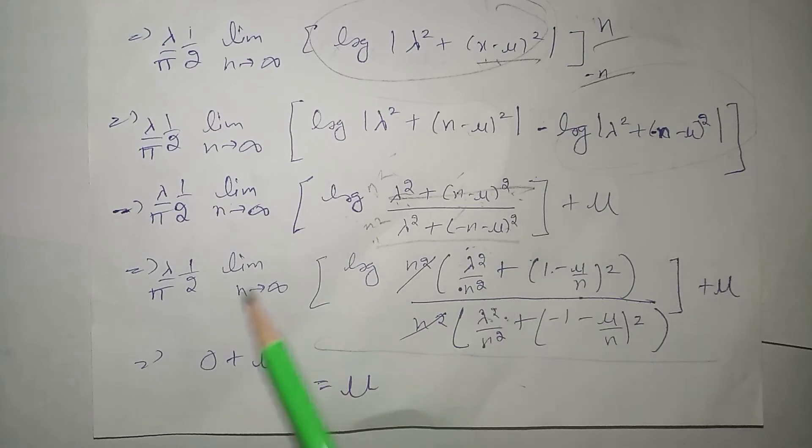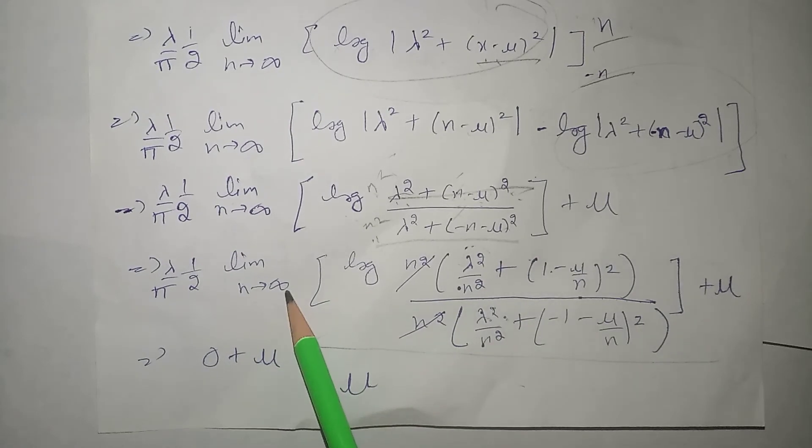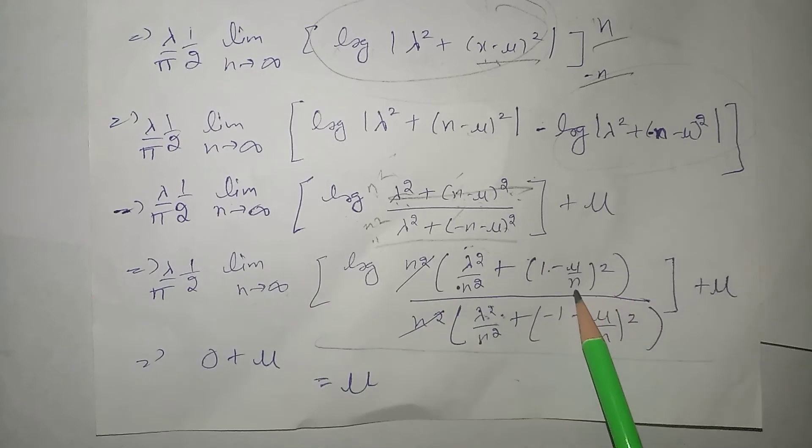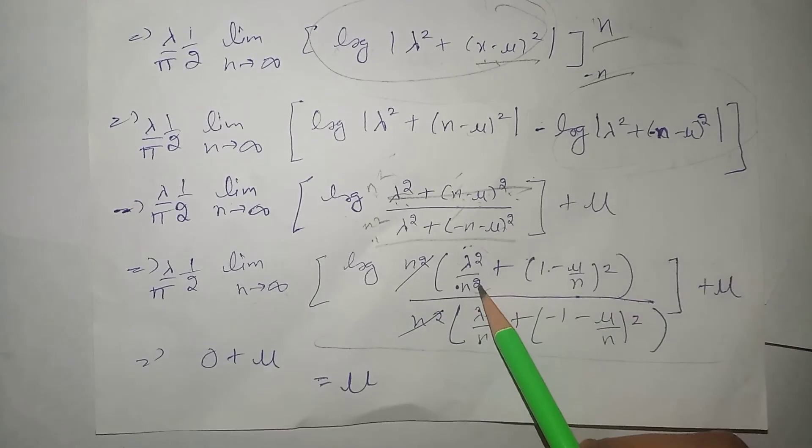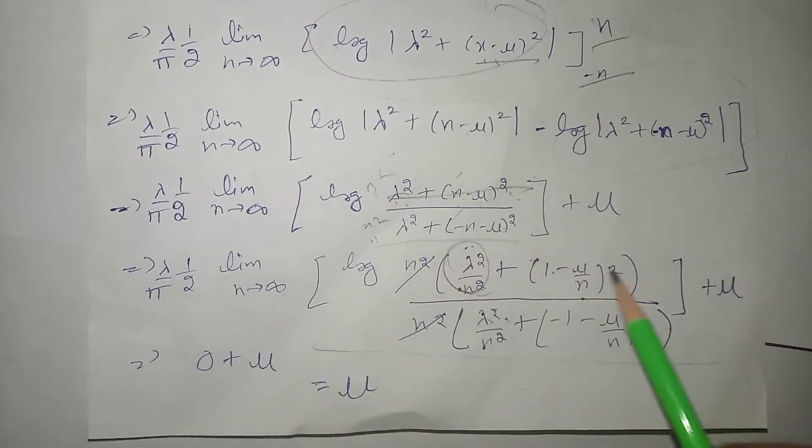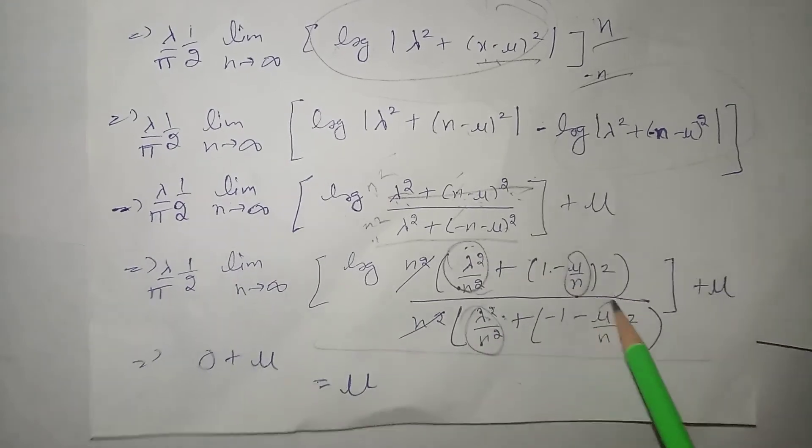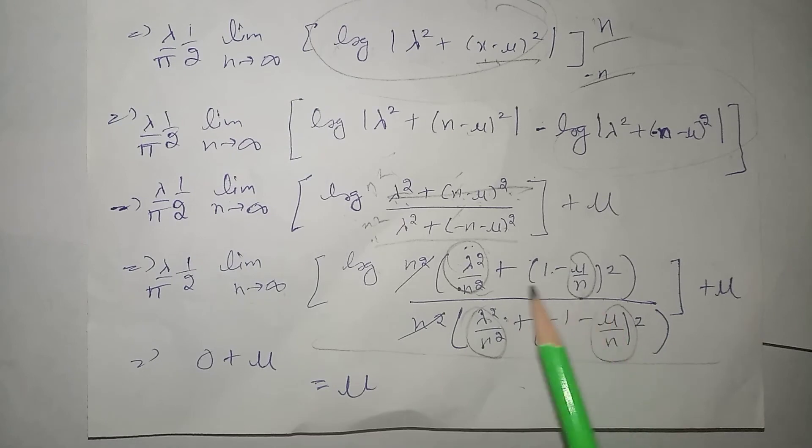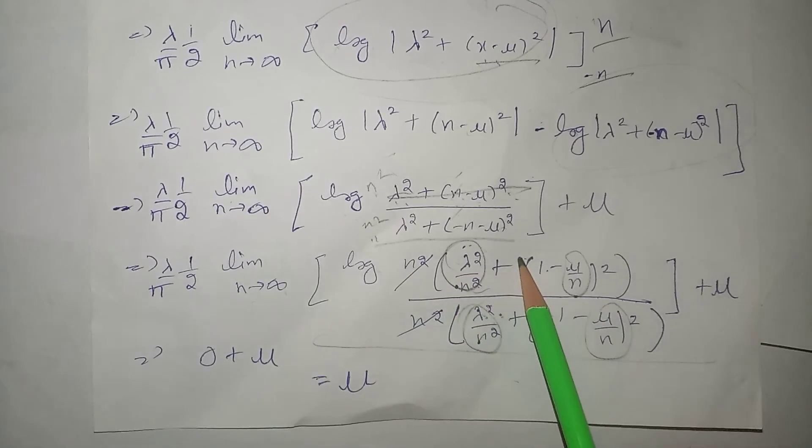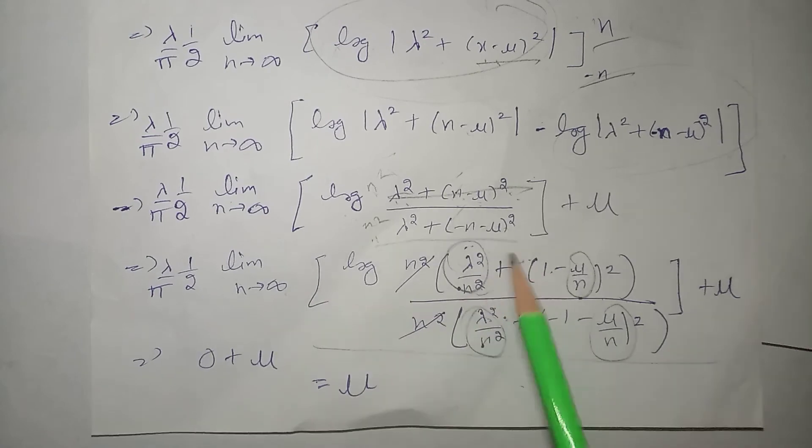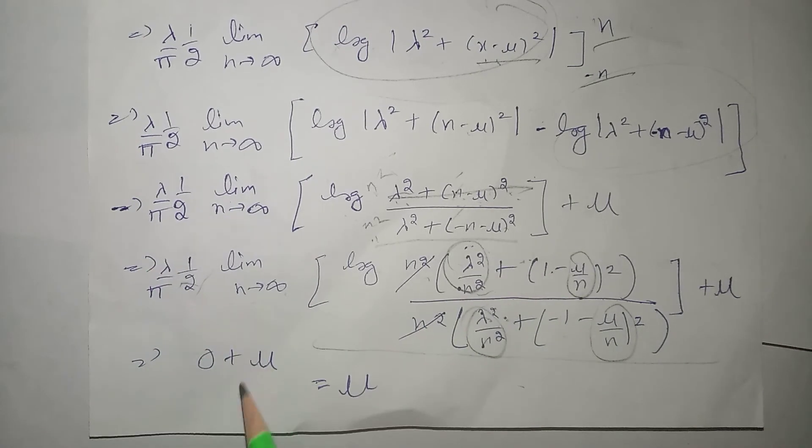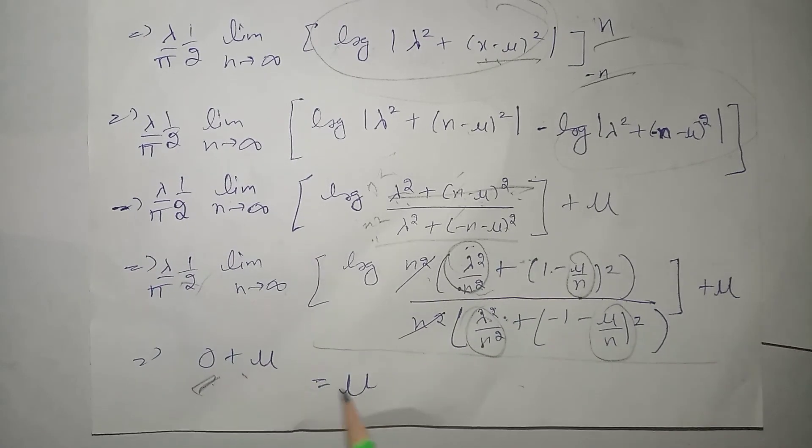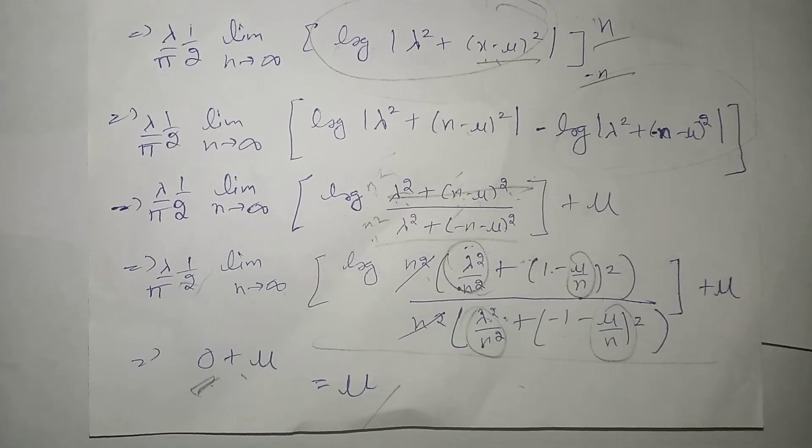Now. Ab agar haam limit n approaches to infinity. That is, jahan par n likha hai. Wahan par infinity put karenge. Toh, dekhi. Something about infinity is equal to 0. That is, humne n zero ban gai. Yeh zero. Yeh zero. Yeh zero. Humne raha jayega. Log one. Log one. That is, niche toh one hi rahega. That is, overall log one rah jayega. And log one ki value zero hoti hai. So, zero multiplied by this term is again zero. That is, zero plus mu is equals to mu. Which is the mean of the Cauchy distribution.